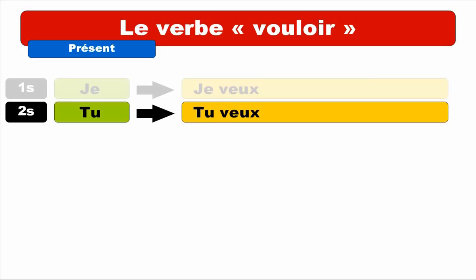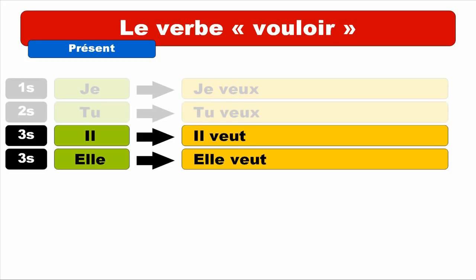Third person — IL and ELLE. Masculine is IL. IL VEUT. Repeat. IL VEUT. You can see that final T is not pronounced — same pronunciation as for JE and TU. Repeat. IL VEUT. ELLE — well, same pronunciation. ELLE VEUT. Repeat. ELLE VEUT.